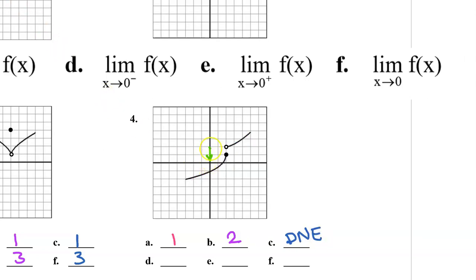Now consider what happens as x approaches 0. As we approach 0 from the left we approach a y value of negative 1. As we approach 0 from the right we still approach a y value of negative 1. Because the limit from the left and the limit from the right are the same, the overall limit as x approaches 0 is negative 1.